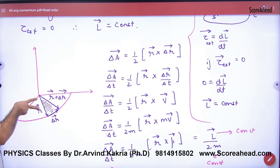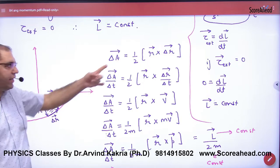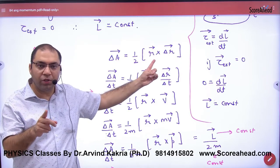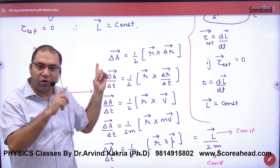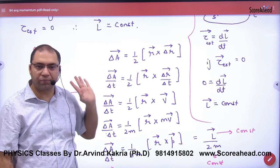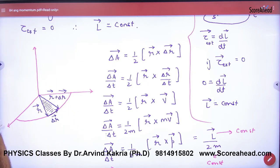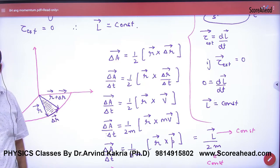So what will it be? Area vector will be half into base into height. So base will be R vector, and perpendicular height will be delta R vector. And here there will be cross product because area is a vector. Cross. In the first step, half into base into height area. We have a very small element when it is straight and with radius, it is also tangential, so it is also 90 degrees.